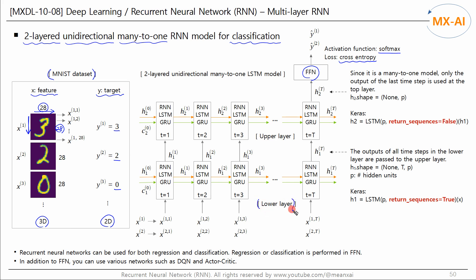This model has two recurrent layers, a lower layer and an upper layer. The outputs of all time steps in the lower layer are passed to the upper layer. This model has a many-to-one structure overall, but the lower layer has a many-to-many structure, because the output of every time step must be passed to the upper layer. Therefore, when creating the lower layer in Keras, we need to set the return_sequences argument to true. Since the upper layer is a many-to-one model, we set the return_sequences argument to false.